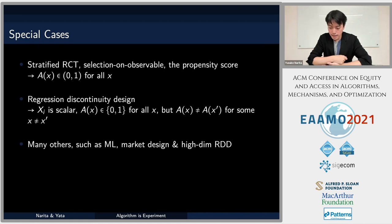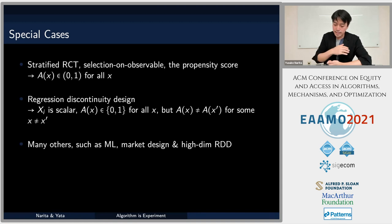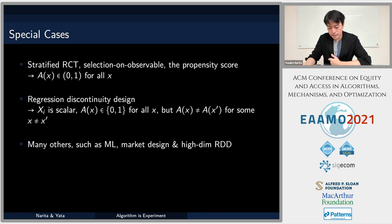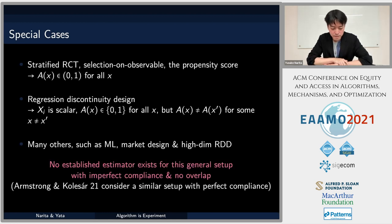Imagine the input vector x contains just a scalar running variable, and conditional on any value of x the treatment recommendation probability A(x) is degenerate — zero or one — but as we move across values of the running variable there are certain jumps or discontinuities. This is the typical regression discontinuity design (RDD) scenario, which is also a special case of our framework. Our framework is really an integration of the classic propensity score scenario and the RDD scenario, allowing it to contain machine learning, market design, and high-dimensional RDD setups.